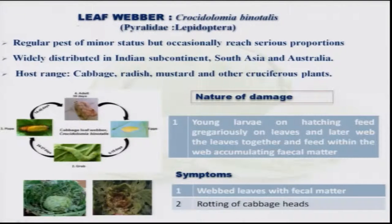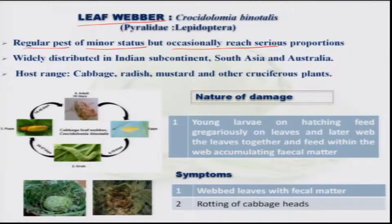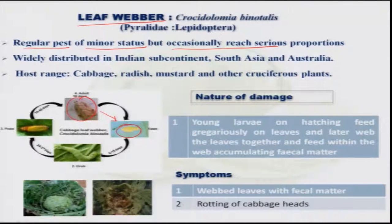The leaf webber is also widely distributed and is a fairly regular pest, but of minor importance as it only occasionally reaches pest proportions. The stout moth lays eggs in small batches of about 15 to 20. The larvae initially feed gregariously by scraping the leaves, but later they web the leaves and feed internally. Severe infestation leads to defoliation and also attacks the head region, causing rotting of the head.